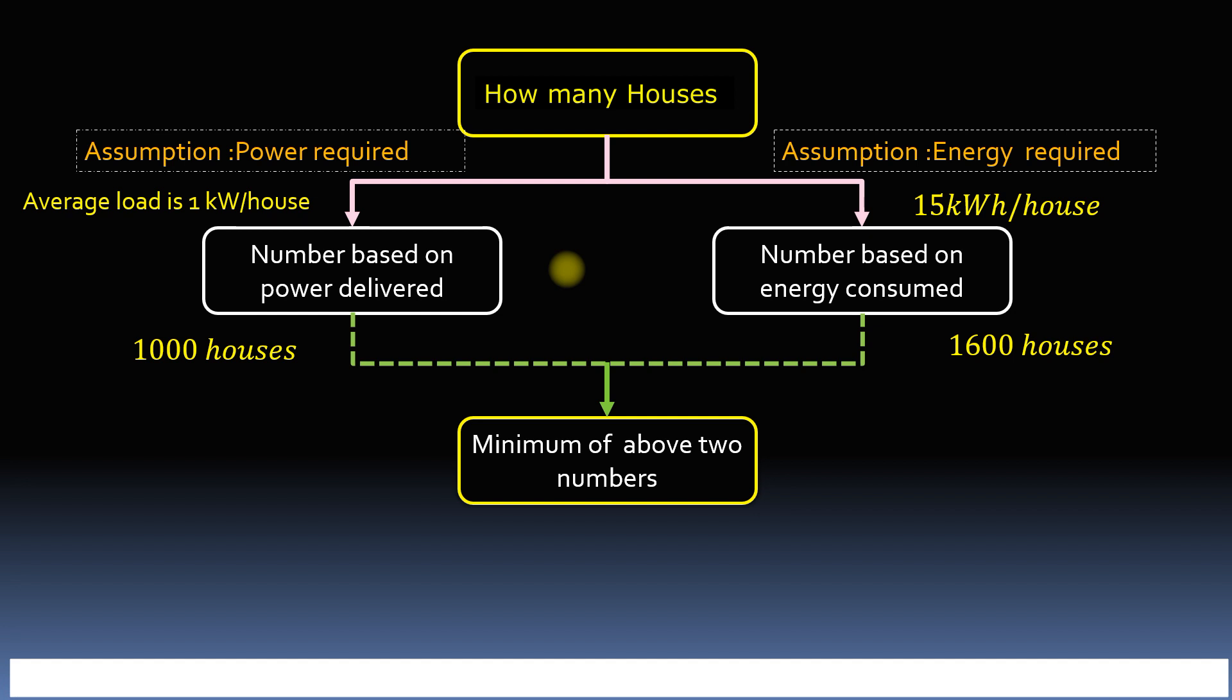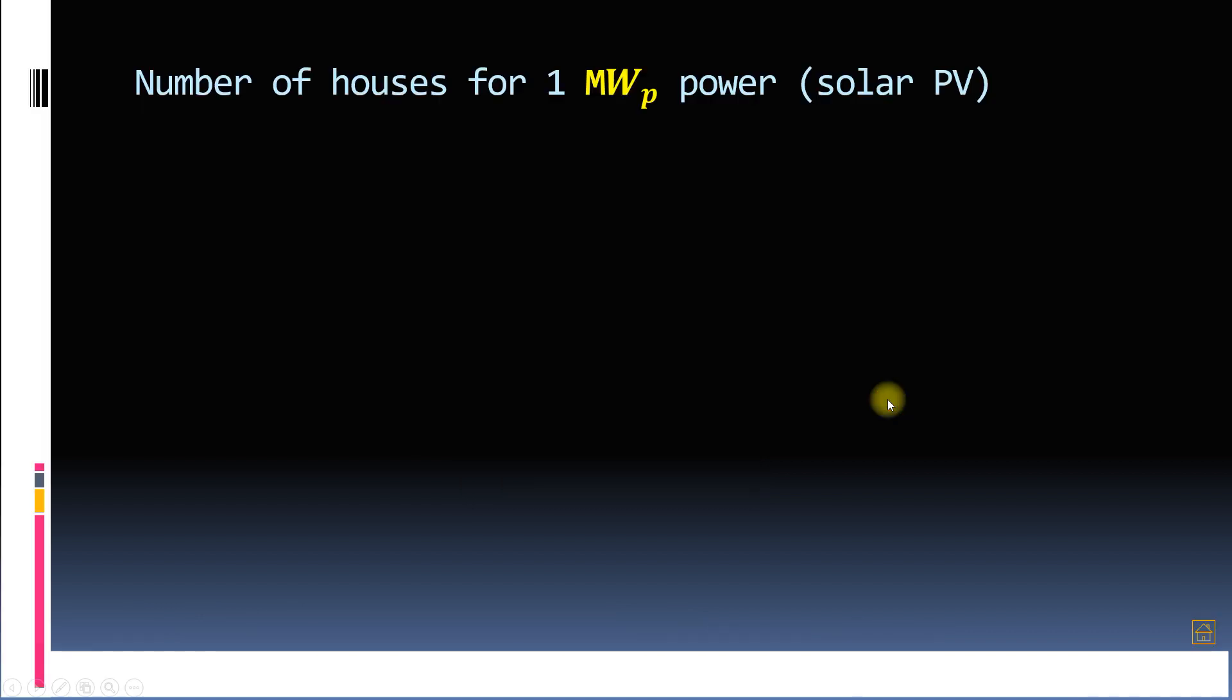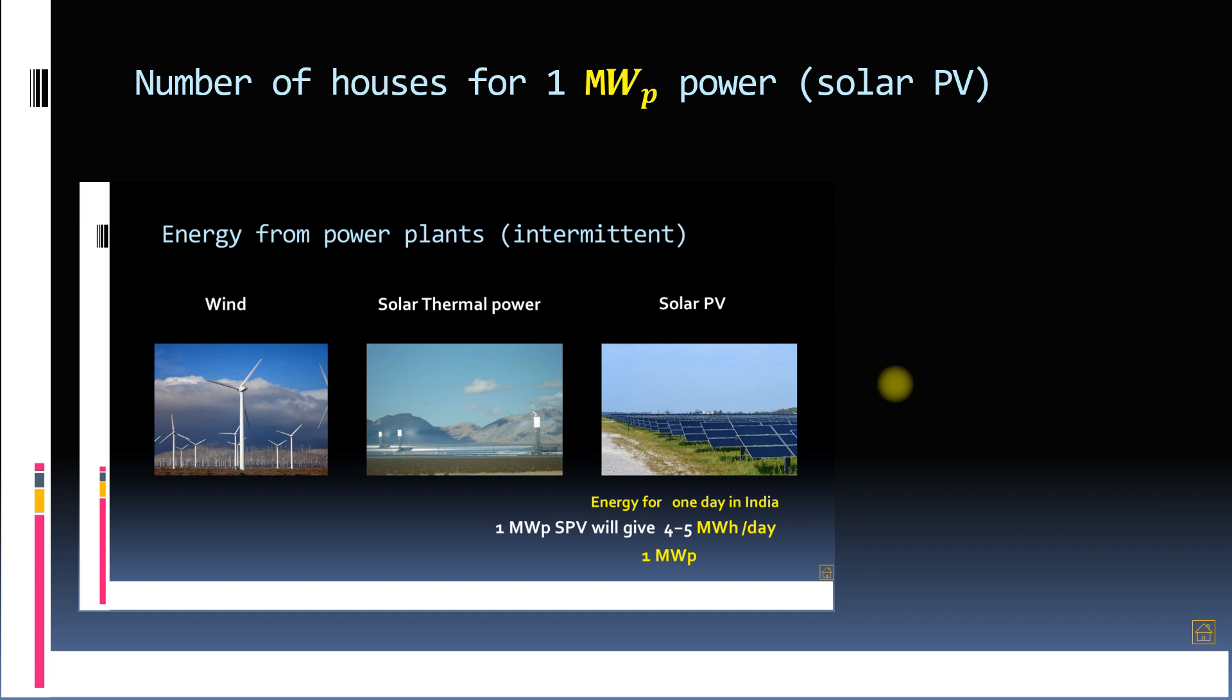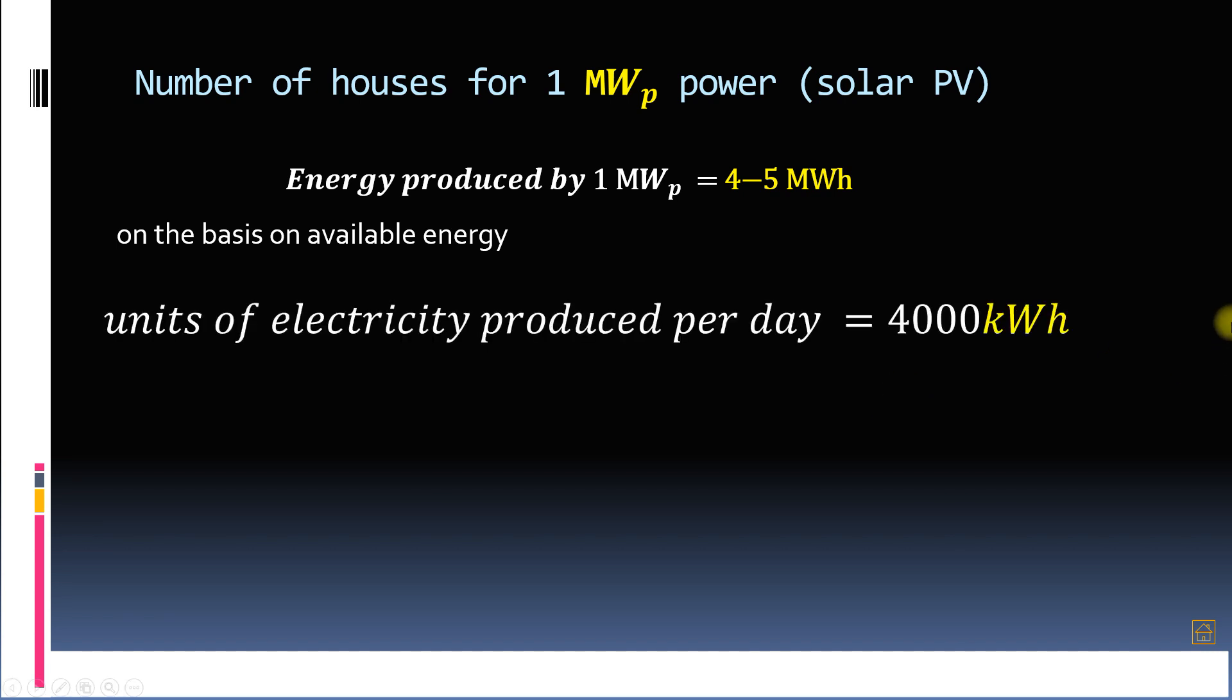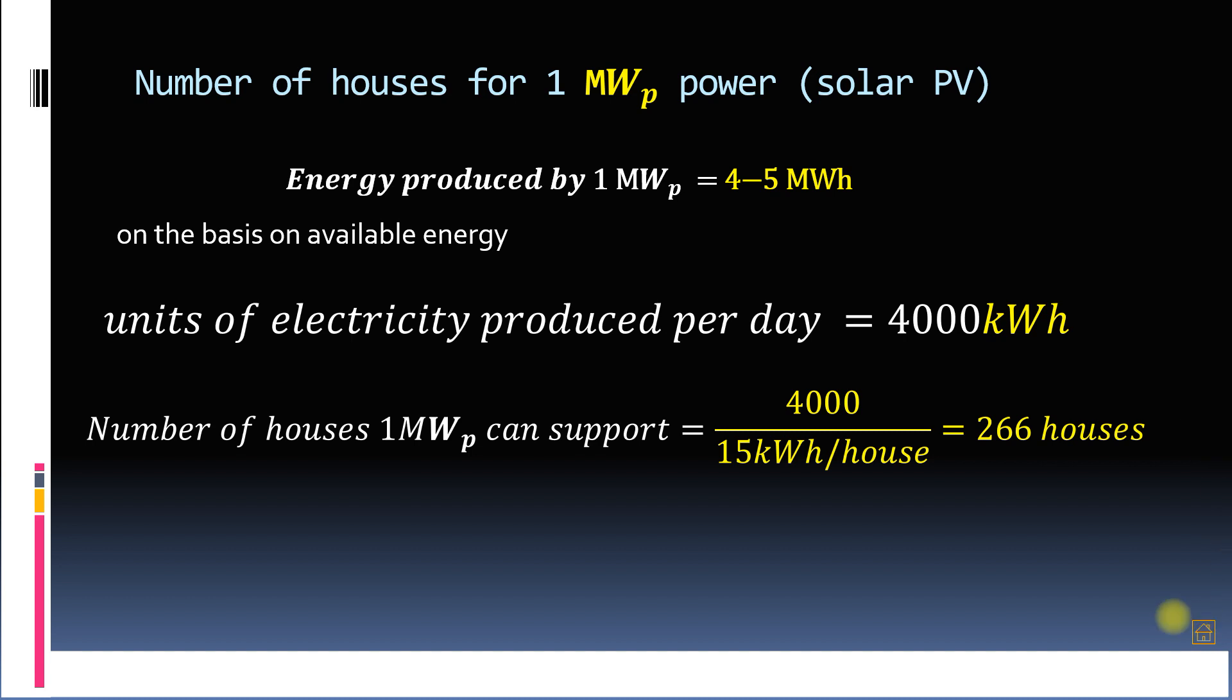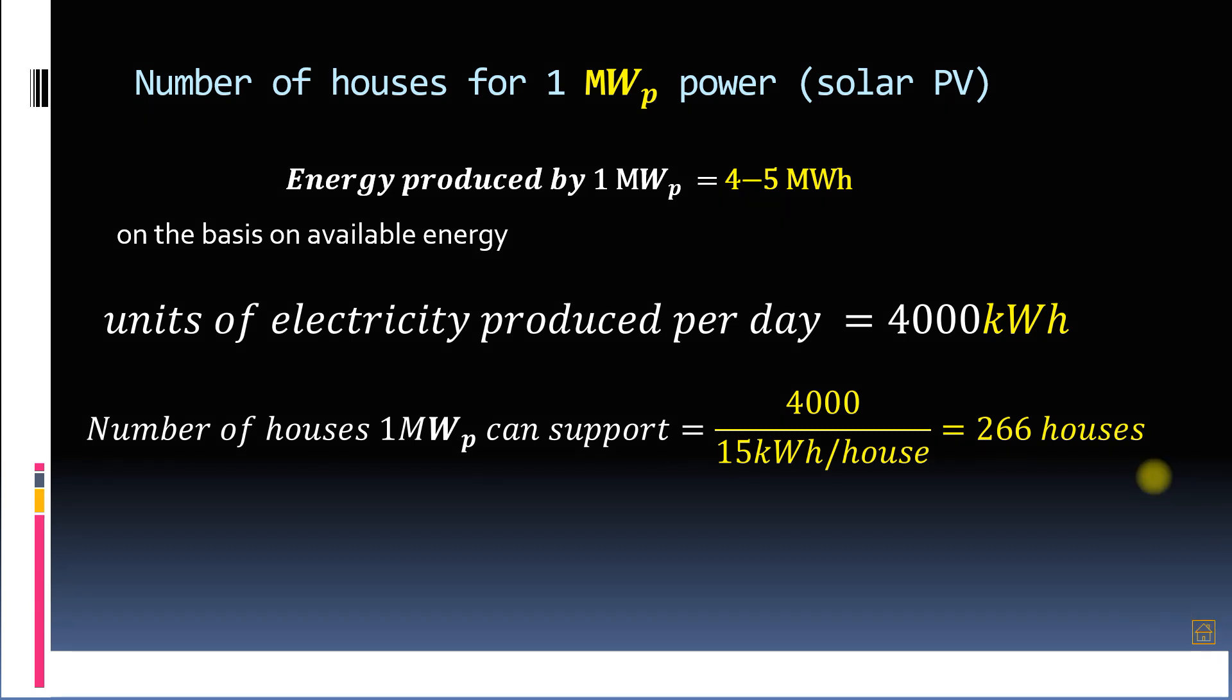Let's work out number of houses for power plants which supply power intermittently. Let's find out on the basis of energy. We know that 1 megawatt solar PV can give energy equivalent to 4 to 5 megawatt hours per day. Let's say 4 megawatt hours or 4000 kilowatt hours energy is produced per day. Then the number of houses that can be supported by 1 megawatt solar photovoltaic plant is 4000 kilowatt hours divided by 15 kilowatt hours per house. This gives us 266 houses.